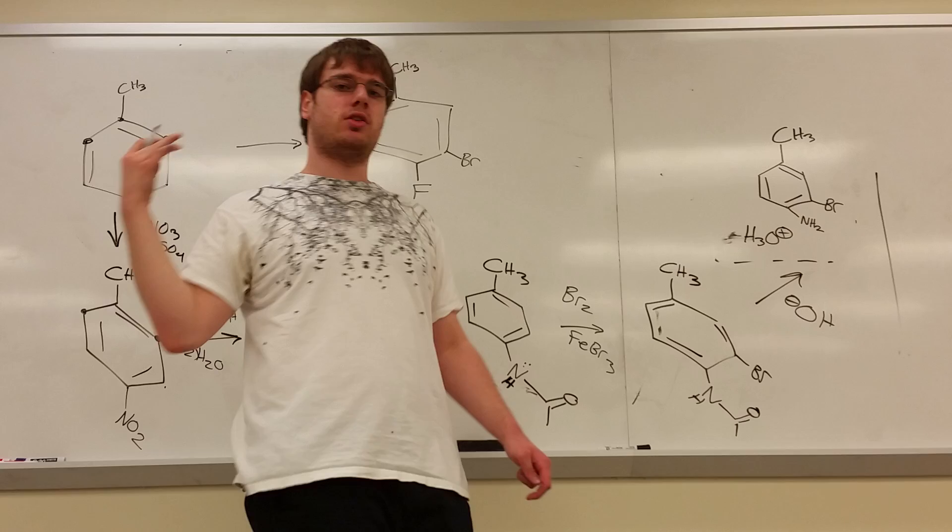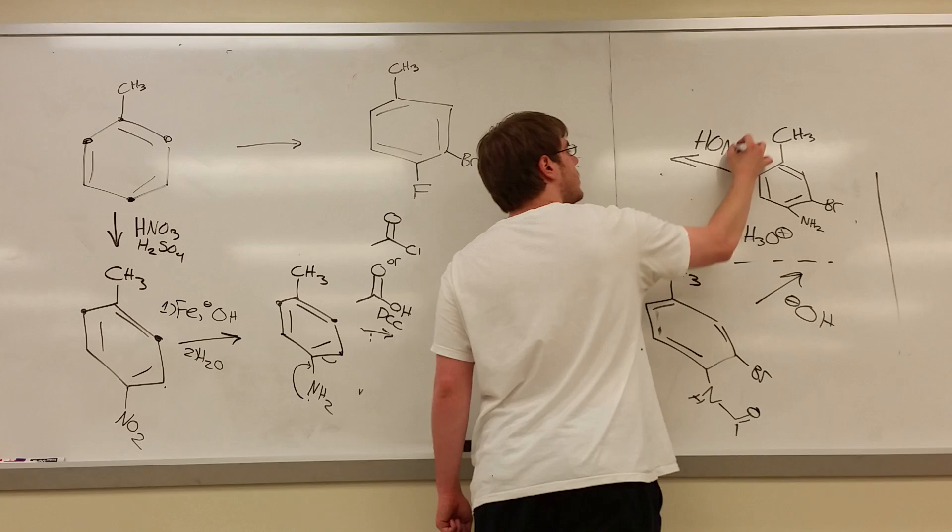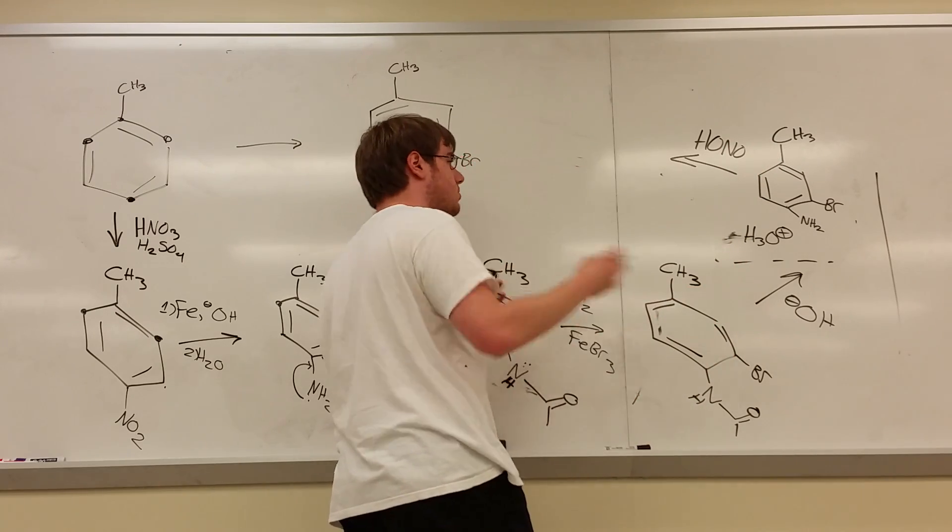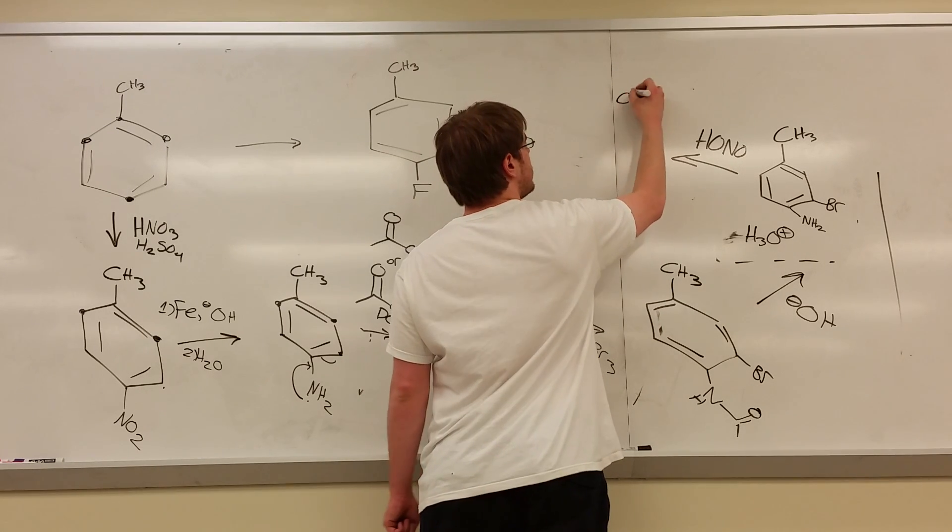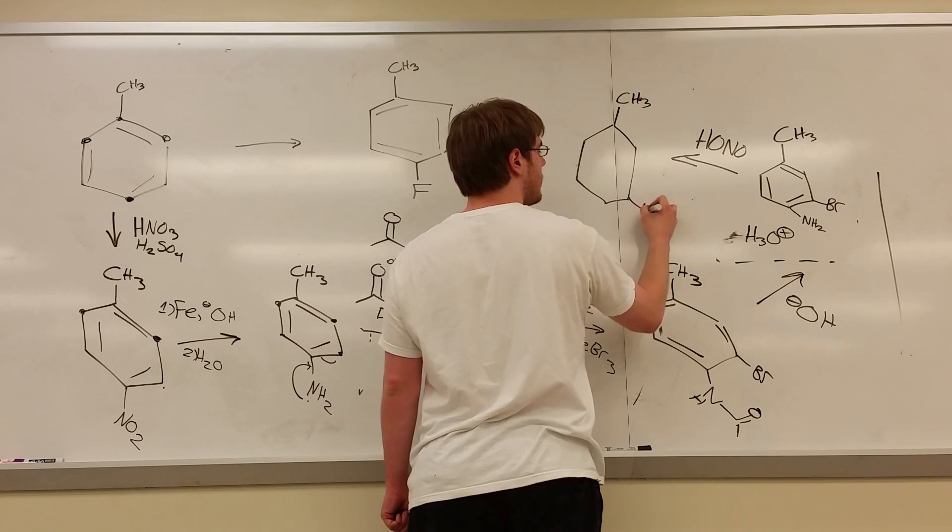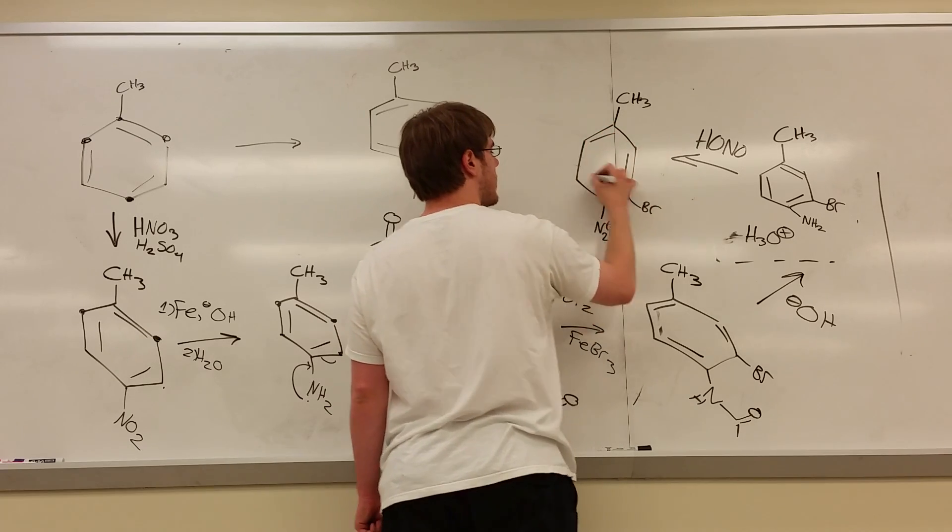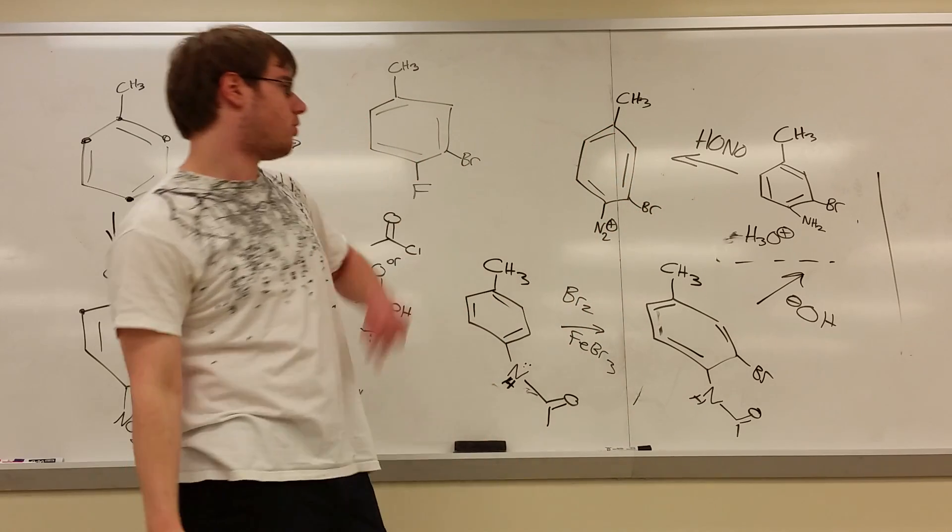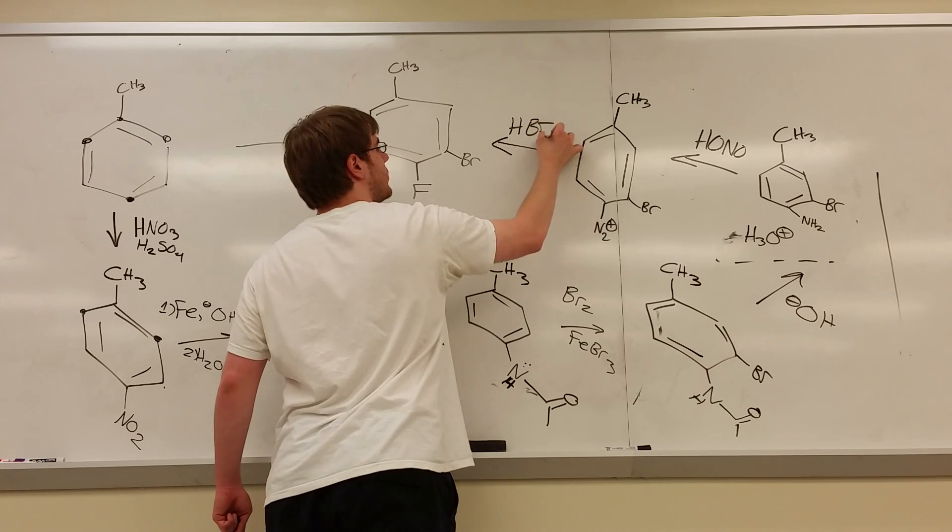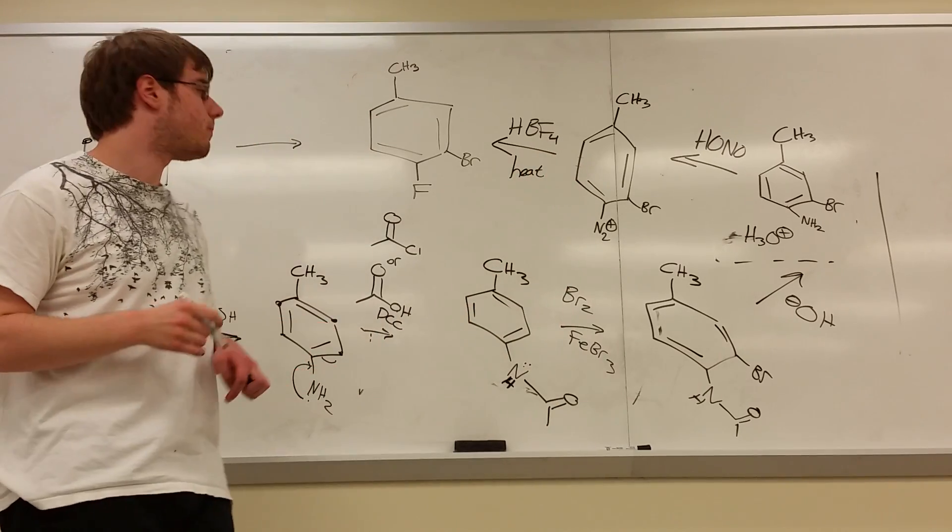Now we need to turn that NH2 into the fluorine. So first what you do is you convert that to N2 positive using HONO or NaNO2 with HCl or any source of H+. And now I have CH3, I have my benzene, I have my bromine, and I have my N2 positive. So one step to go. I just need to use the reaction that replaces N2 positive with fluorine, and that is HBF4. I believe heat is also involved, but if you see HBF4 you know what you're doing. Heat is less important here.